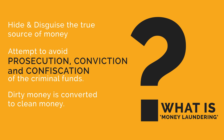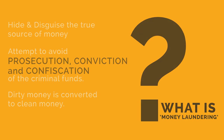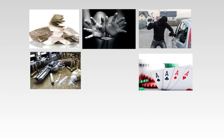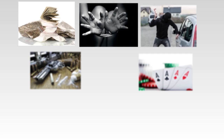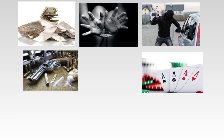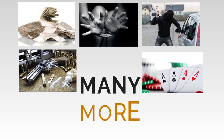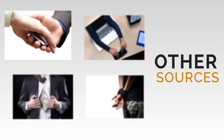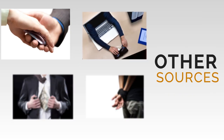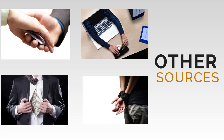Now that we know the definition of money laundering, it is important to know the sources of dirty money. In this category, we have drug trafficking, human trafficking, criminal offences, gambling, smuggling, and many more. Other sources of dirty money are bribery, fraud, tax evasion, and kidnapping.